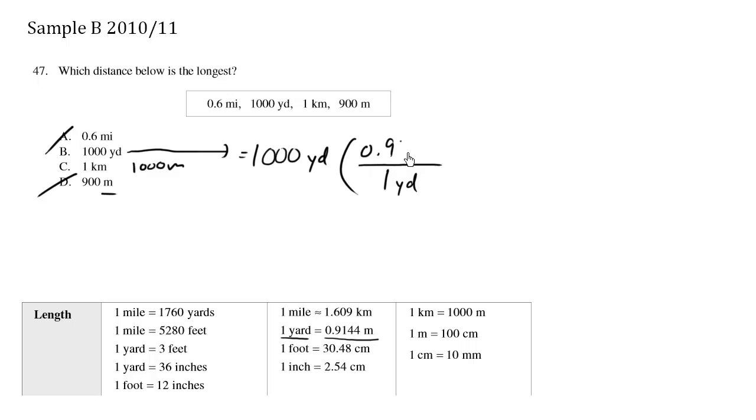We see one yard equals 0.9144 meters, so the yard units cancel out and we can solve the amount of meters. 1,000 times 0.9144 is the same thing as moving the decimal one, two, three over, so this is 914.4 meters.